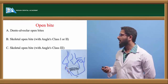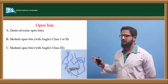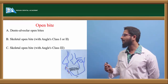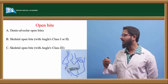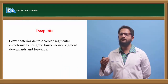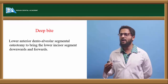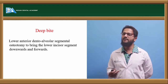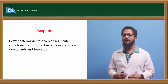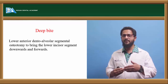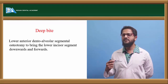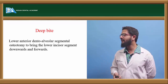The diagrams indicate how sagittal split osteotomy is done for these cases — including category B, where skeletal open bite with class I or II is shown and proper positioning of the mandible closes the open bite. For deep bite — where there is excessive overlap between upper and lower arches — lower anterior dentoalveolar segment osteotomy is done. Since deep bite means excess overlap, downward and forward positioning of the jaw segment brings the lower incisor segment into proper relationship with the upper arch, correcting the deep bite.